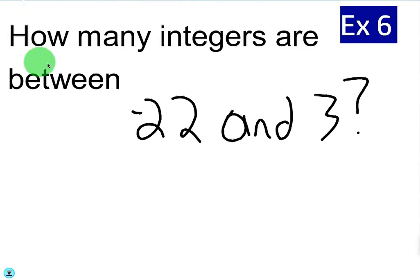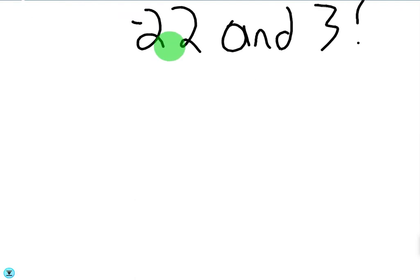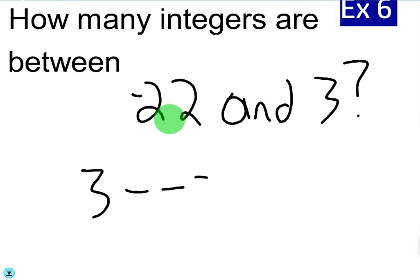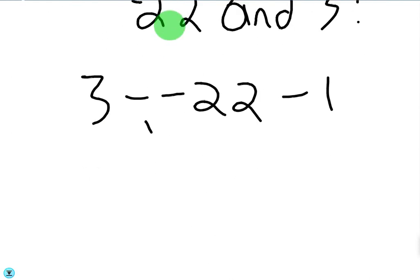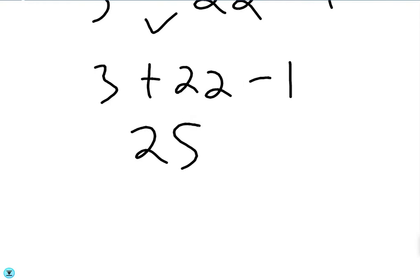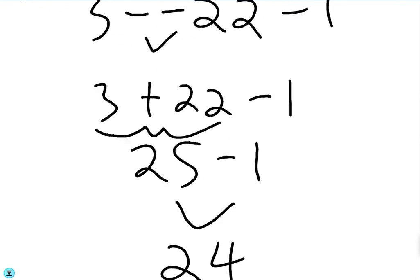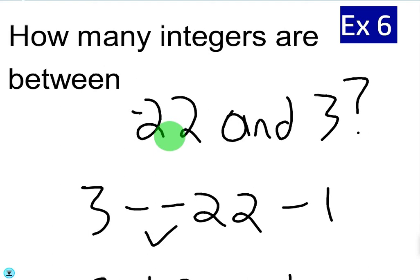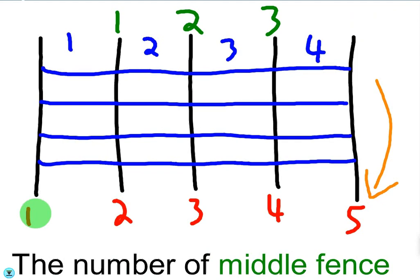Last example: negative 22 and 3. We do the bigger minus the smaller and then subtract 1. So it's 3 minus negative 22 minus 1, and 3 minus negative 22 becomes 3 plus 22, then minus 1. 3 plus 22 is 25, subtract 1 — the final answer is 24. So there are 24 integers between negative 22 and 3. This works for any two integers. Always go back to the fence post principle: the number of integers between two integers is the number of middle fence posts.